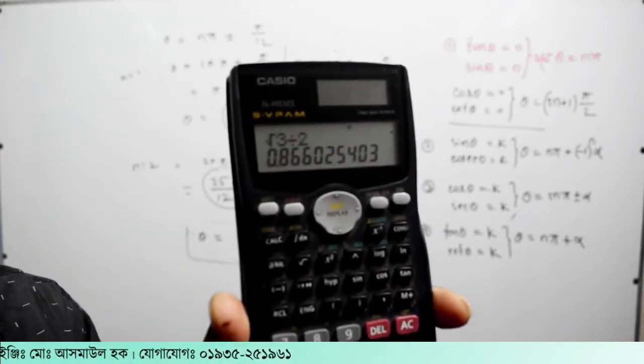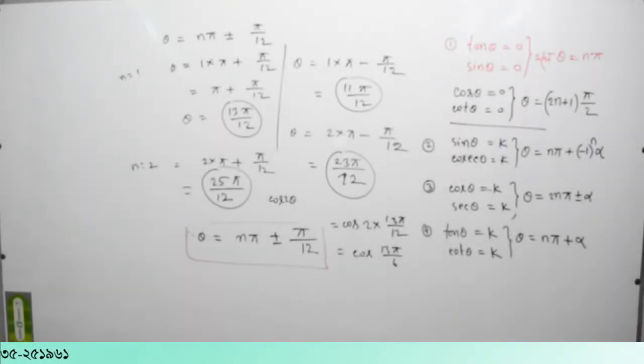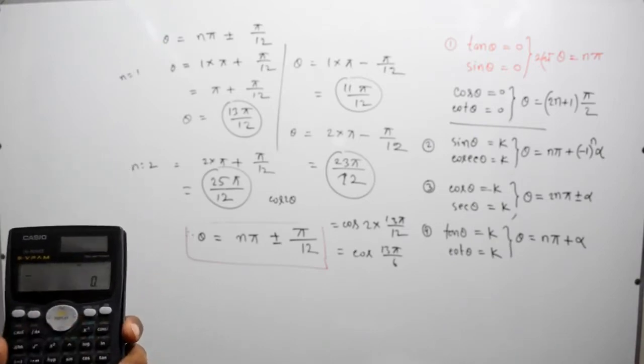So this is the answer to the question. Let's go and read the question. Let's see how π is the answer. How did we get that? Cos 2 theta is equal to root 3 by 2. Cos 2 theta is the answer.